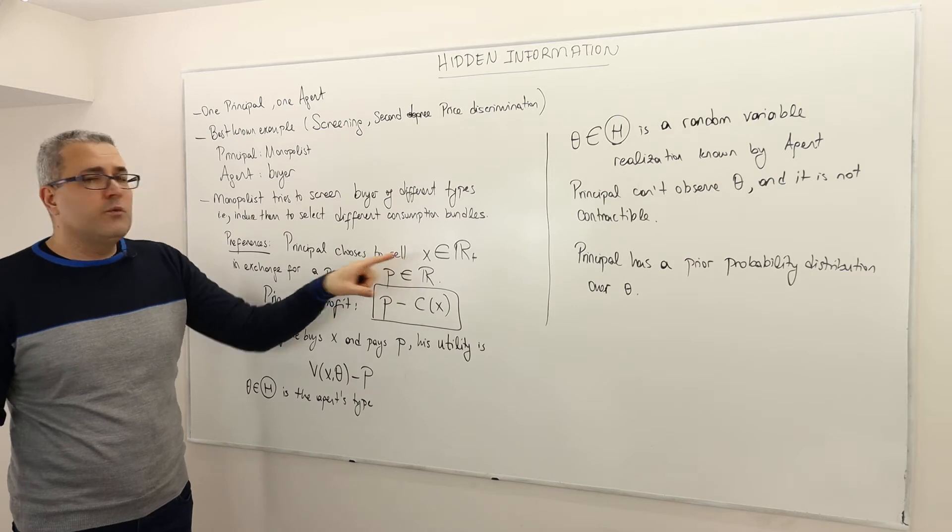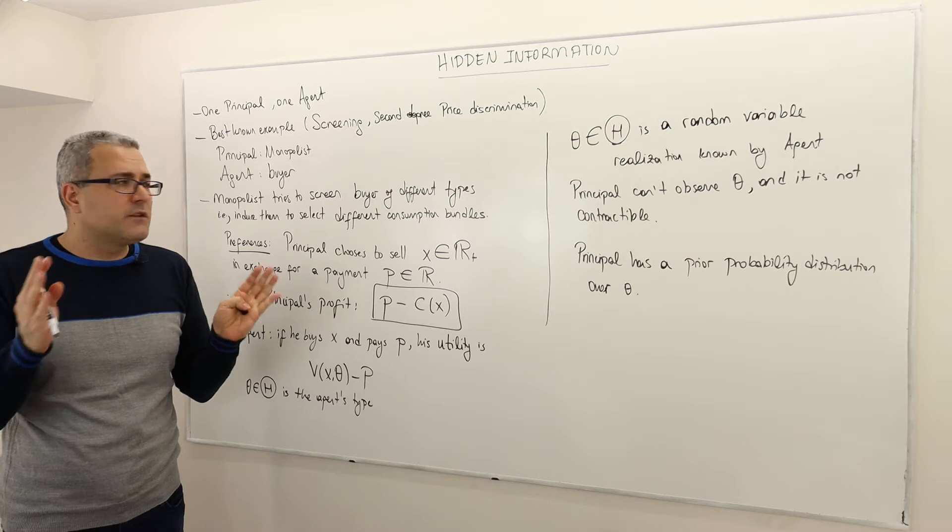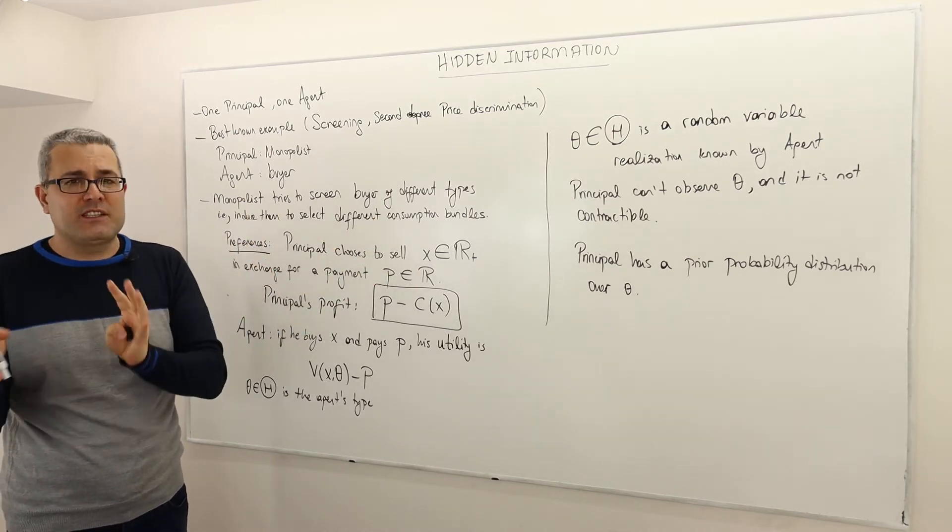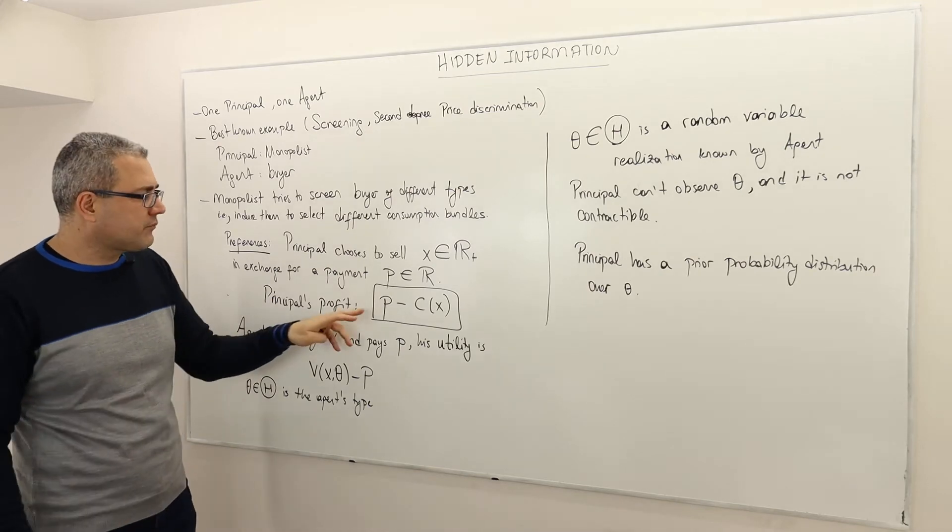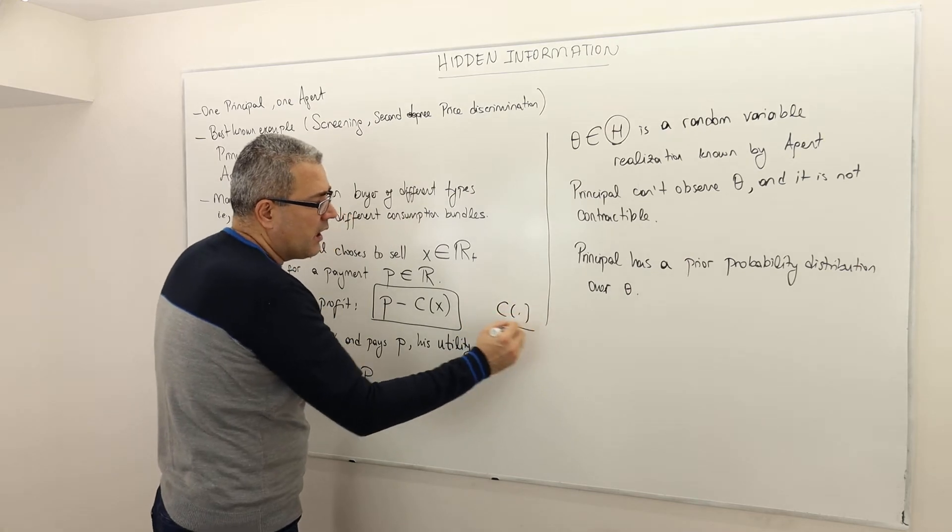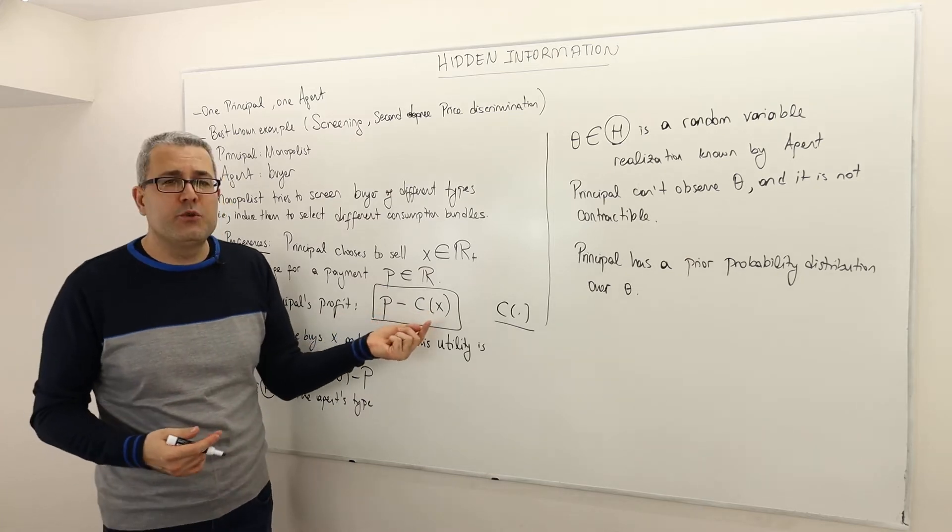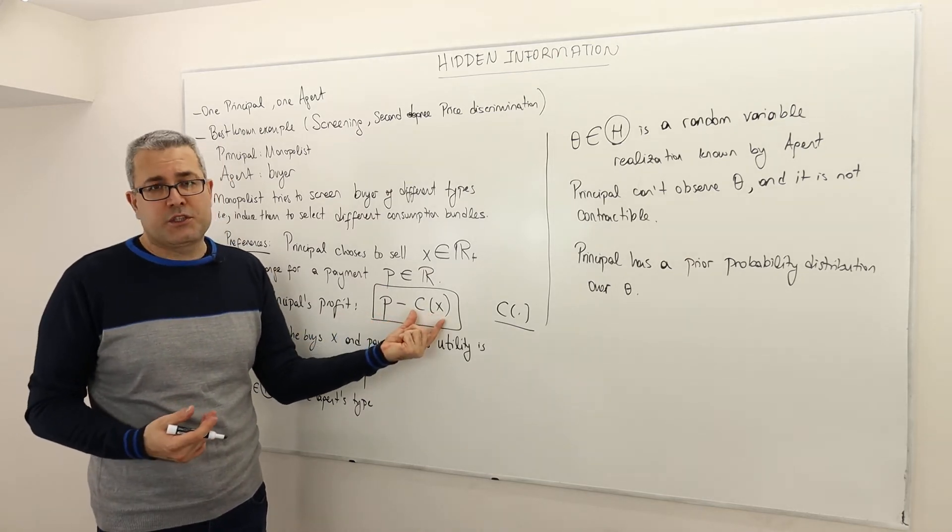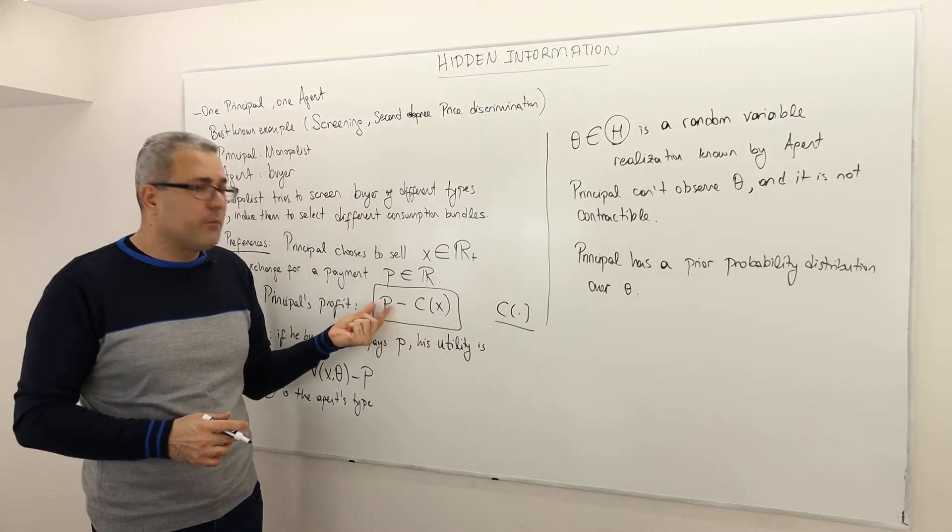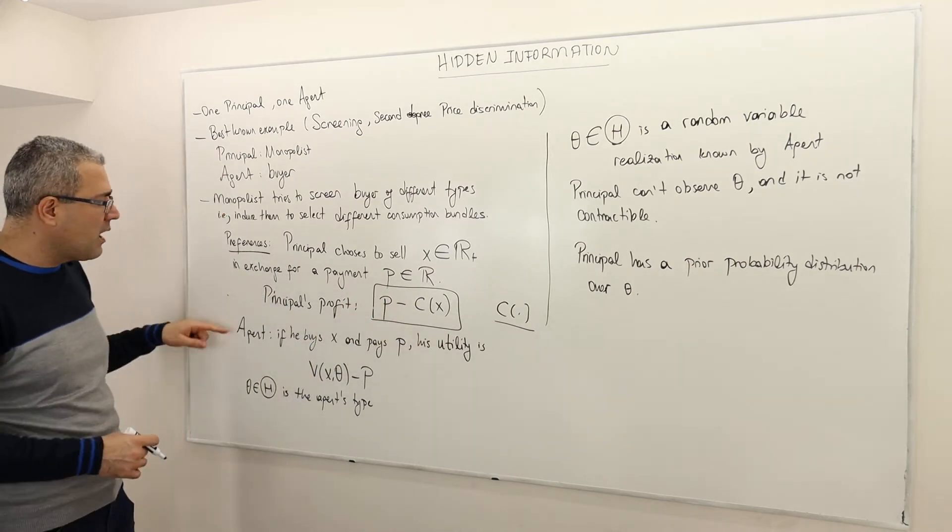So don't forget, the P is not the price per output. P is the price for the entire package, so X units of output. The price is P. What is C? C is the cost function, the total cost function of the monopolist. So if you want to produce X units of output, it costs you this much money. And once you sell this X at price P, P is going to be your revenue, and so P minus C of X is your profit.